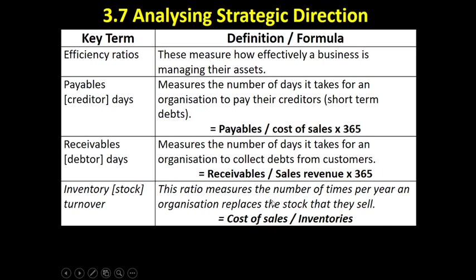Inventory turnover is one of the efficiency ratios, measuring how effectively a business is managing its assets. Inventory turnover — previously known as stock turnover — literally measures the number of times an organisation sells out of stock and has to replenish its stock levels. So they sell everything, there's nothing left over, and how many times do they need to replenish those stock levels over the course of a year?